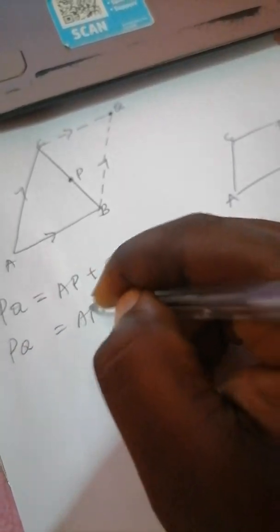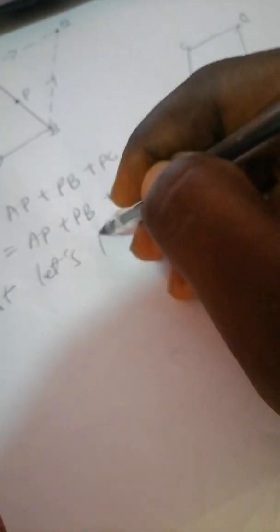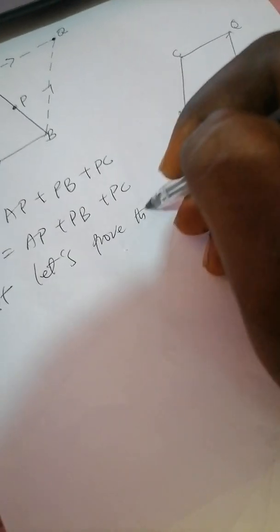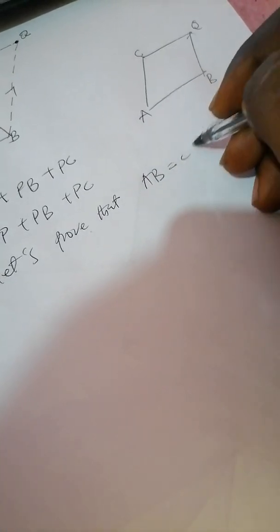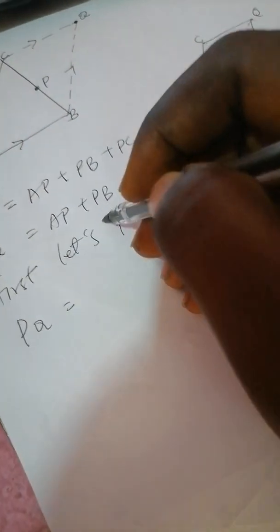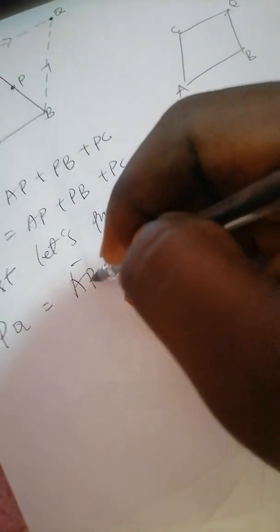You will prove this one by one. So first, let's prove that AB is equal to CQ. Now you realize that when I add AP plus PB, I get AB straight away. So I get AB here plus PC.